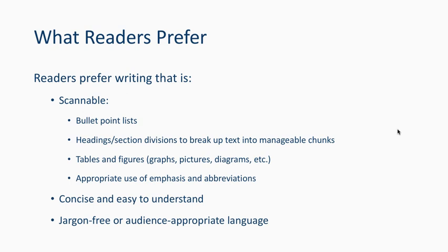Jargon-free or audience-appropriate language means writing to the correct audience. For a high-tech peer audience, you can use field-specific and project-specific terminology freely. For low-tech or lay audiences, you need to provide alternatives so people understand what you're discussing without requiring full explanations of every technical concept or term in the field.